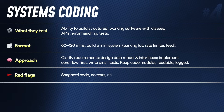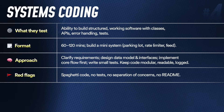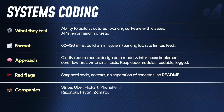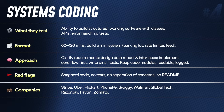Red flags in machine coding include very bad variable naming, spaghetti code, no tests, no modularity, and not following SOLID principles — these will likely get you rejected. Stripe has a Bug Squash round, Uber has a real-world problem coding round, and companies like Flipkart, PhonePe, Swiggy, Paytm, and Zomato are among the many adopting this round, so be prepared.